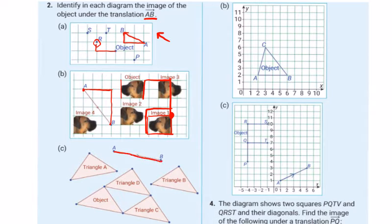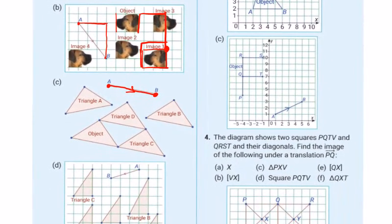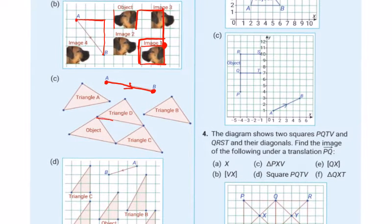Here, A to B is going in this direction. Let's have a look. The object has to go in the same direction, so it has to go from there to there. So it has to be Triangle C in this case, can't be anything else.